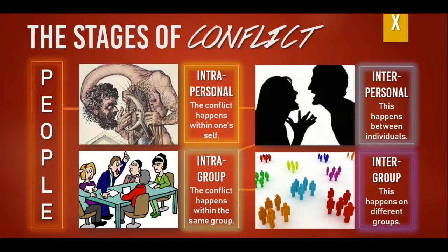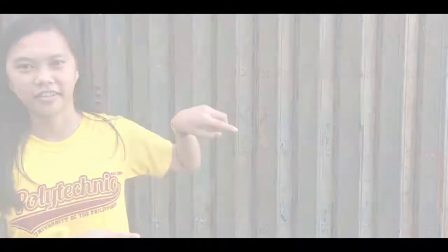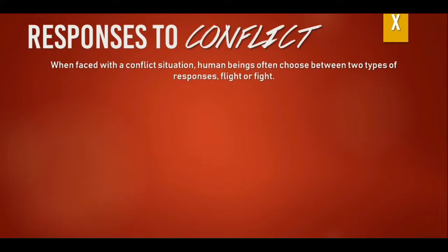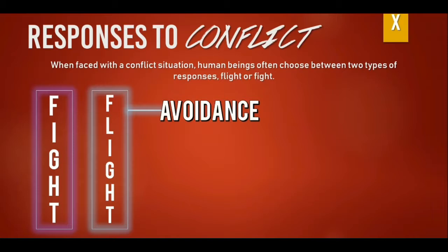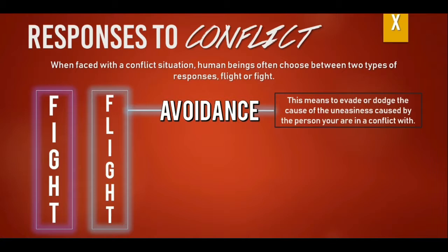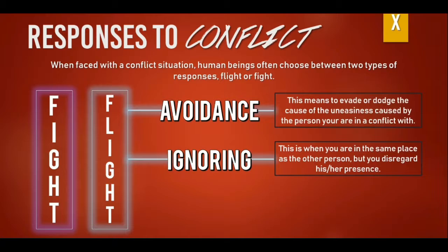When people are faced with conflict situations, they oftentimes have different responses, but there are two major responses — they either fight or flight. When we choose flight, we either avoid, ignore, or deny. Avoidance is when we try to dodge the uneasiness caused by the person we are in conflict with. Ignoring is when conflicting people are in the same place but choose to disregard each other's presence. Denying is when someone asks if you are in a conflict but you refute their question and observation.